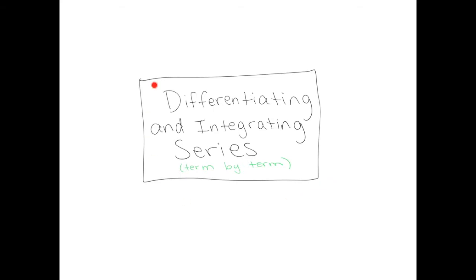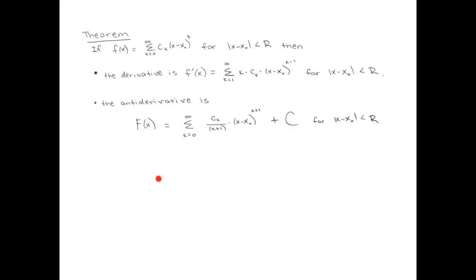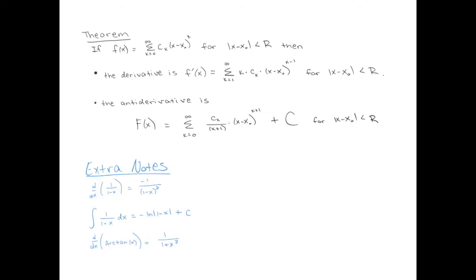We can also get series from the geometric series by differentiating or integrating. Here's the theorem: suppose you have a power series valid with some radius of convergence r. You can take the derivative term by term — k comes down in front and the power reduces by 1 — and that gives the series for f′(x), valid with the same radius. Alternatively, you can take the antiderivative, increasing the power by 1 and dividing by k+1, also valid with the same radius.